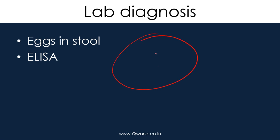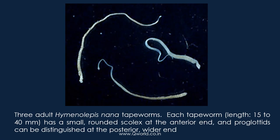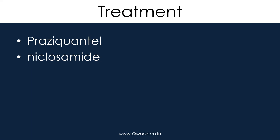Laboratory diagnosis: you can identify the egg with polar filaments in the stool, which contains the embryo. Serological methods like ELISA can be used for antibody detection. Treatment is praziquantel.